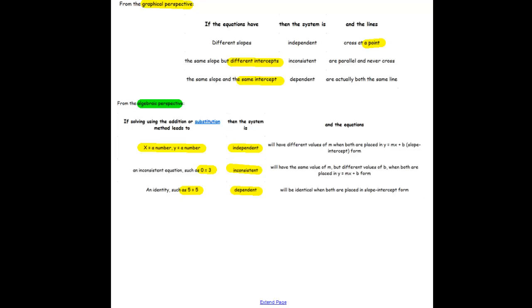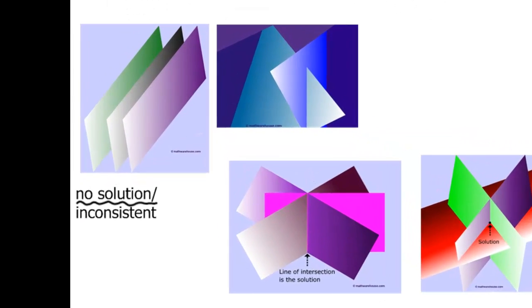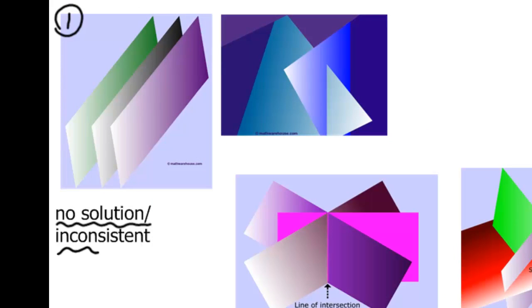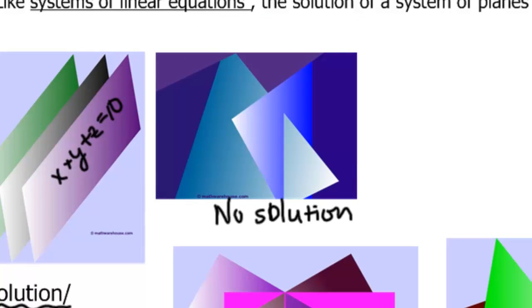So now we're going to take a look at how this might look graphically with a system of three equations. A system of three equations or three variables represents planes, not lines. So if that's the case, then we could have three non-intersecting planes here, and this would be no solution or an inconsistent system. Remember that this might be the equation of a plane, x plus y plus z equals 10. z is our third dimension. We could also have no solution here. What's happening is you have two planes that are intersecting, and you can barely see this one up here. This is kind of flat, not intersecting the other two at the same point, so that's also no solution.